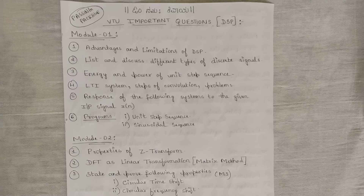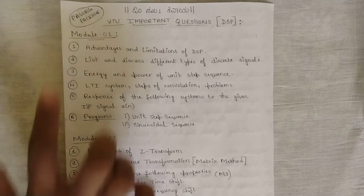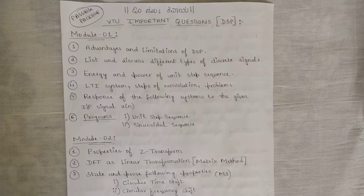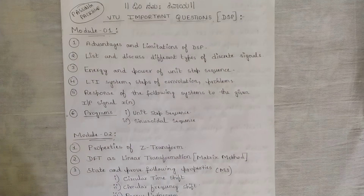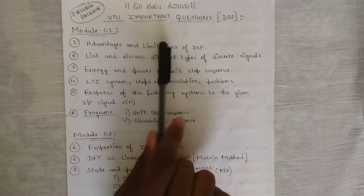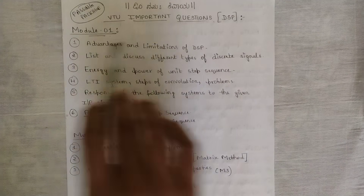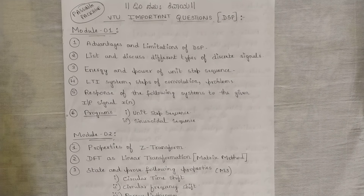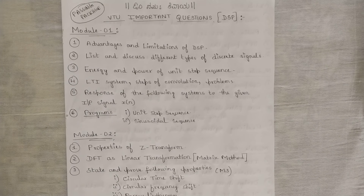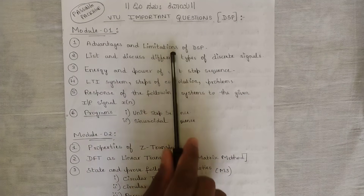Let us start from module one. In module one, you should be covering concepts related to DSP — that is digital signal processing — mainly the theory part: advantages and limitations of DSP. I have already covered these in my module one videos. This question has high chances of being asked because in the previous year question paper it was asked, and according to the VTU pattern there are high chances of questions being repeated.